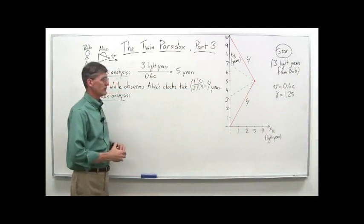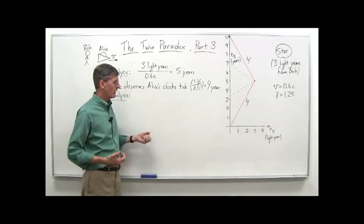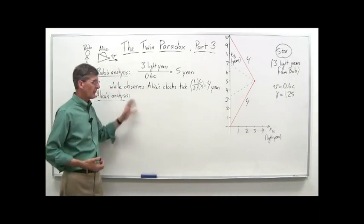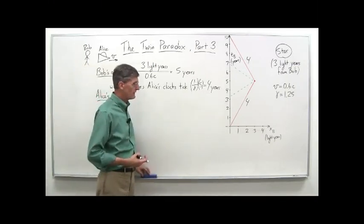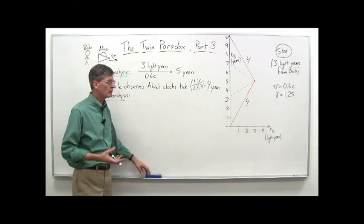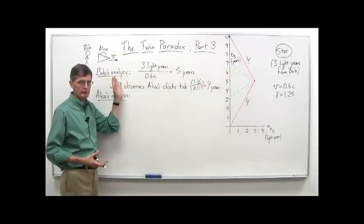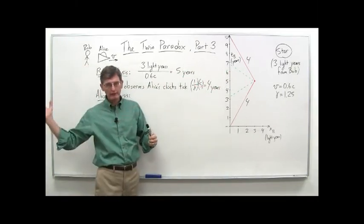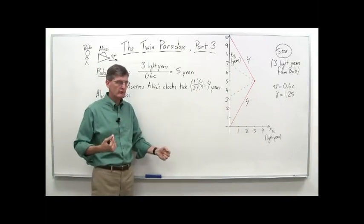On to part three of the twin paradox. In this part, we're going to do a quantitative analysis of what's going on - Bob's perspective versus Alice's perspective. Before we get to that, I want to go over one more point that I didn't emphasize quite enough in the earlier video clips, because some of you may still be thinking it still seems symmetrical. Alice travels to the star and back again from Bob's perspective. From Alice's perspective, she sees the star come to her, Bob go the other direction, turn around, and come back. How do you tell the difference between those two situations?